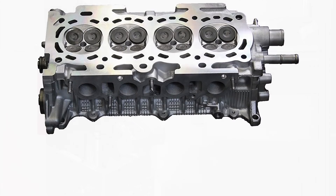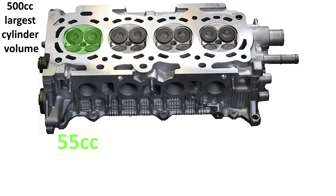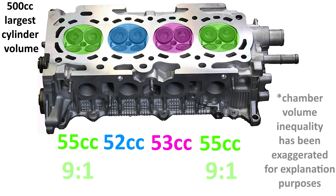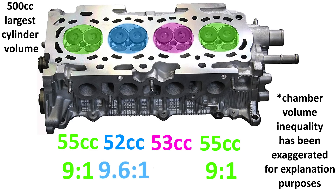So let's say we have a 4-cylinder engine. Chamber 1 is 55 cc, chamber 2 is 52, chamber 3 is 53, and chamber 4 is also 55. This means that compression in cylinders 1 and 4 is 9 to 1, but compression in cylinder 2 is 9.6 to 1 and compression in cylinder 3 is 9.4 to 1.